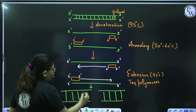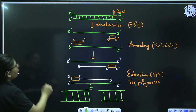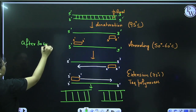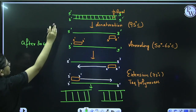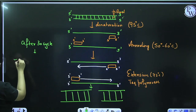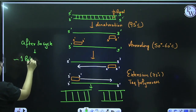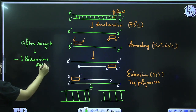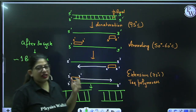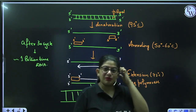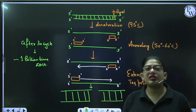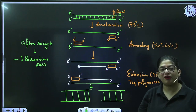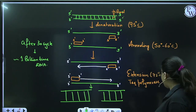After extension, two strands of DNA are formed. After around 30 cycles of denaturation, annealing, and extension, you can get around 1 billion times the original DNA. So just by one machine you can multiply your DNA as much as you want. This is how you can amplify the gene of interest.